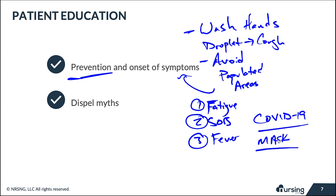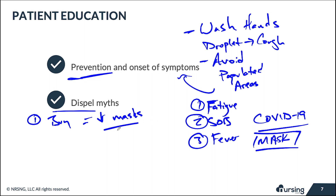Dispelling myths about masks: patients should only wear a mask if they think they are already sick with COVID-19. Masks do not effectively prevent healthy people from contracting the illness. A major concern is that widespread public mask purchasing depletes the supply available for healthcare workers, who depend on them for protection. Encourage patients not to go out and stockpile masks — it does not protect them and creates system-wide shortages.